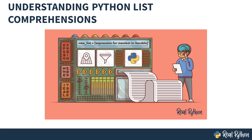Hi, I'm Rich Bibby with RealPython.com. Python is famous for allowing you to write code that's elegant, easy to write, and almost as easy to read as plain English. One of the language's most distinctive features is the list comprehension, which you can use to create powerful functionality within a single line of code.